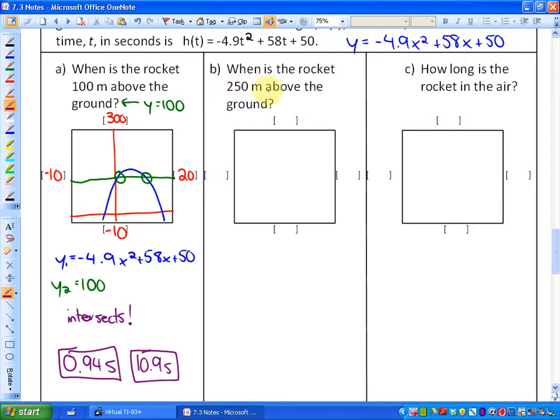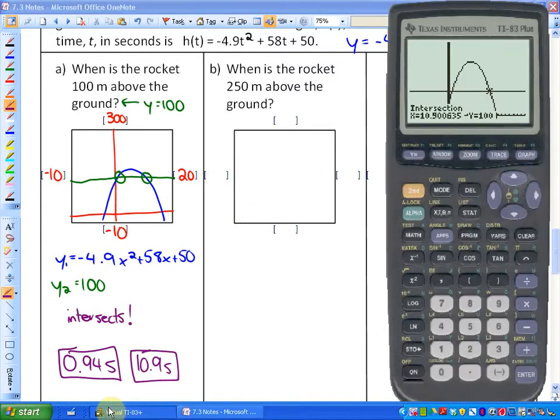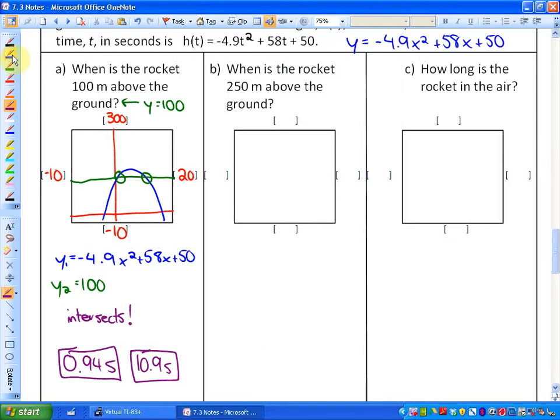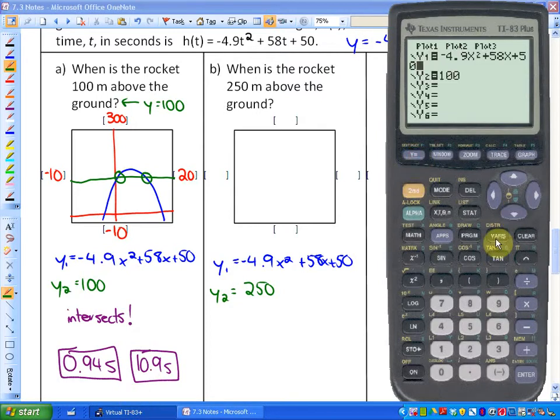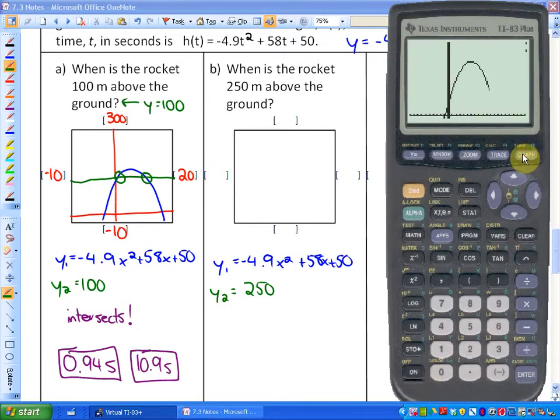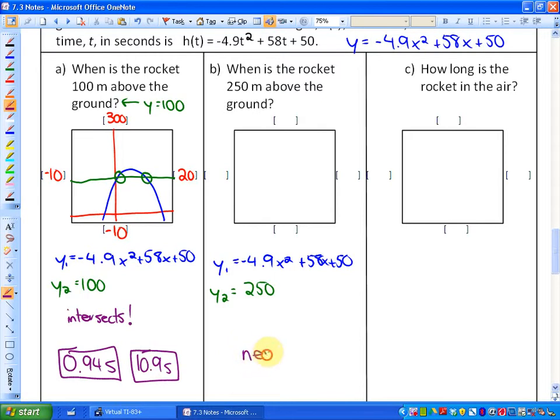Okay. Part B. When is the rocket 250 meters above the ground? In this case, I'm not going to graph it just in order to save time. But if you understand what we're trying to do here, we want to now know when it's 250 meters above the ground. So you're going to put in the regular function, y1 equals negative 4.9. So the rocket function, plus 58x plus 50. And y2 in this case, we want to know when the height is equivalent to 250. So let me just go into y2 and change it to 250. Let's go ahead and graph it. And the interesting thing here, which is really useful to note, is you can see that this rocket never reaches a height of 250 meters. So your answer here is never.